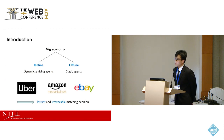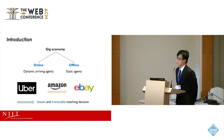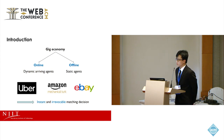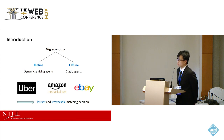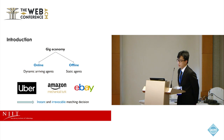Markets in the gig economy are featured by the matching process between two parties. The first is the dynamic arriving agents called online, and the second is the static agents called offline. Some examples of gig platforms include ride-hailing services where drivers are connected with riders, crowdsourcing platforms where workers are assigned tasks, and online recommendations where customers are suggested different items or products. One important feature of the gig economy is due to the low patience of the arriving agents — once they enter the system, we must make an instant matching decision that we cannot change later.